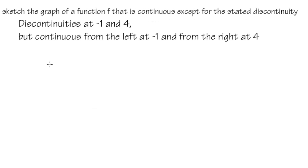For this question, we are going to sketch a graph for the function f, so that it is discontinuous at x equals negative 1 and x equals 4, but continuous from the left at negative 1 and from the right at 4.